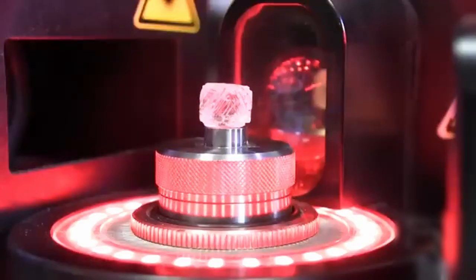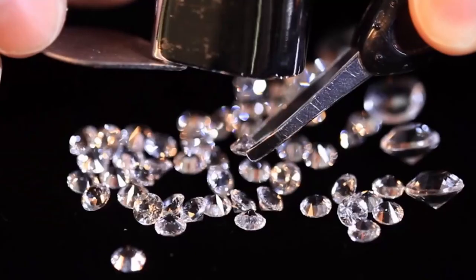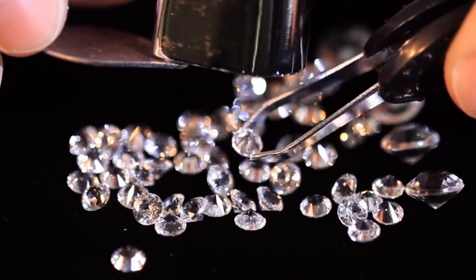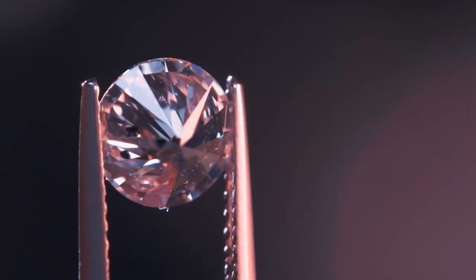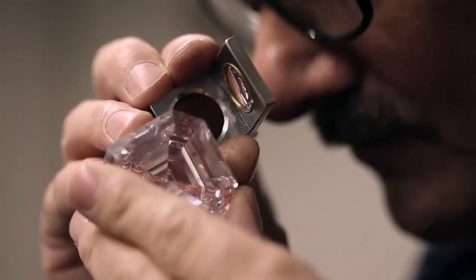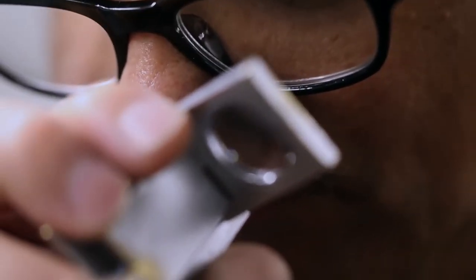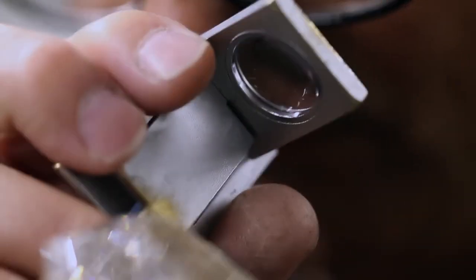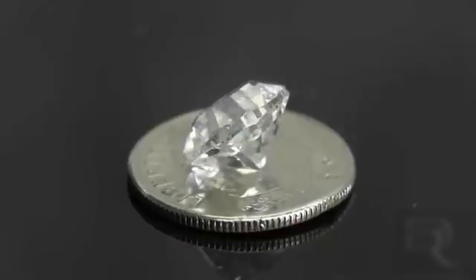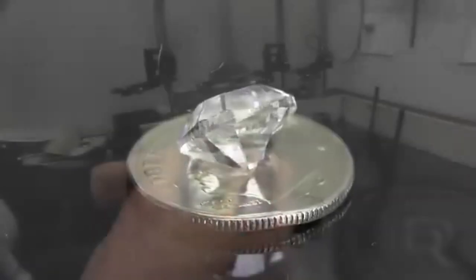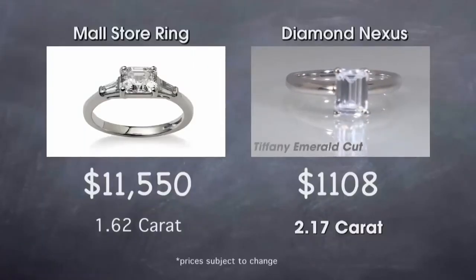Once the diamonds are cut and polished, they undergo a grading process to assess their quality based on the 4Cs: carat weight, color, clarity, and cut. Carat weight refers to the size or mass of the diamond, measured in carats, with 1 carat equaling 200 milligrams. The larger the diamond, the higher its carat weight, and generally the more valuable it is.